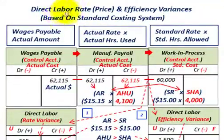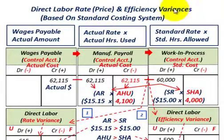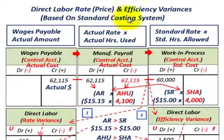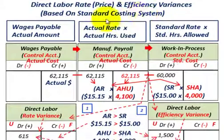What we're going to be going over here is direct labor rate or price variances and also direct labor efficiency variances. We're going to be calculating these based on a standard costing system.